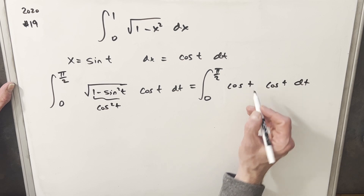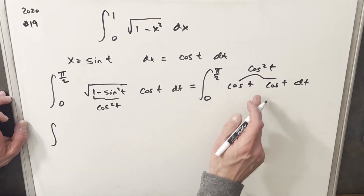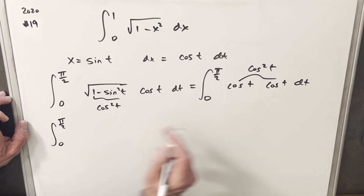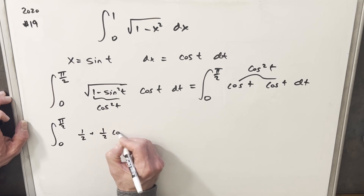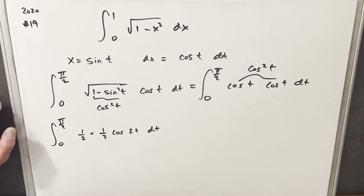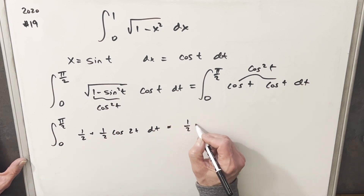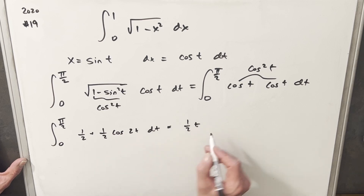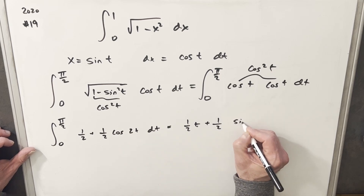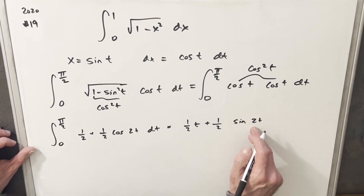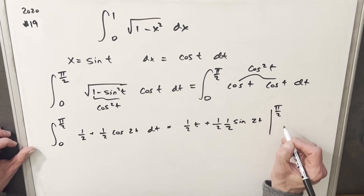So this is just going to be integrating cosine squared of t. For this, I'm going to rewrite it using the double angle formula. Cosine squared of t becomes 1/2 plus 1/2 cosine of 2t dt. Then we'll just integrate: the integral of 1/2 is 1/2 t, and the integral of cosine 2t is sine 2t, but because of the 2 we bring a 1/2 out front, evaluated from 0 to pi over 2.